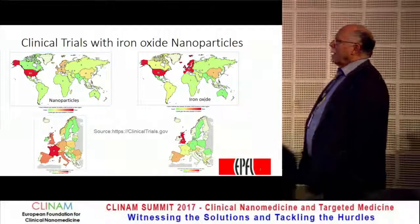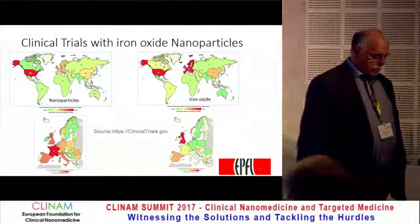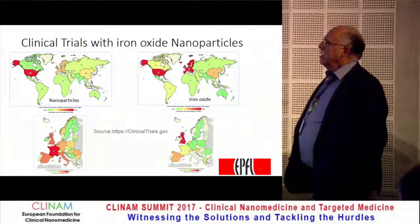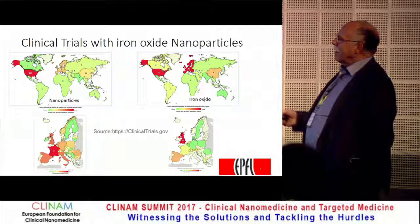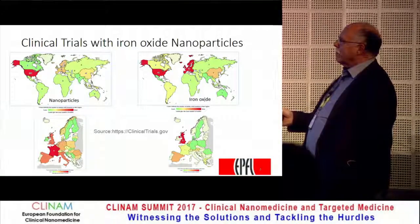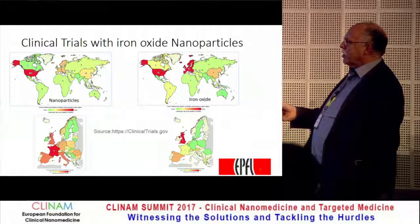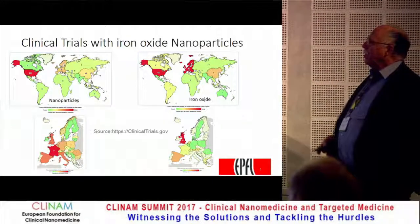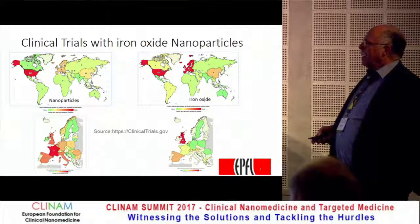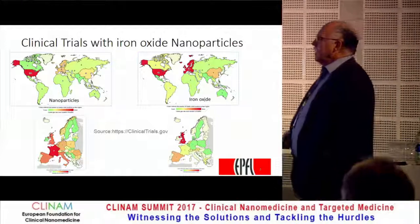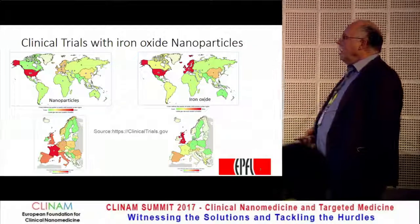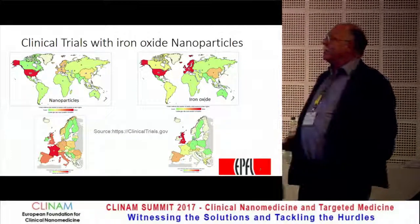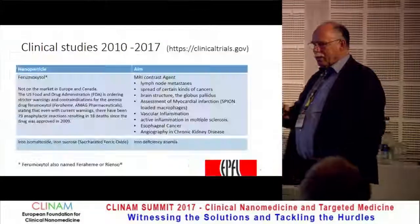Where is the situation on the market and in clinical trials at the moment with iron oxide nanoparticles? We see especially with nanoparticles themselves a huge activity in the US and also in Europe — particularly in France and in the UK. If you look at iron oxide nanoparticles where we have clinical trials, you see in Europe it's the UK, but also France and a little bit in the rest of Europe. So there is some activity, and you can have a look at the activity in this field.